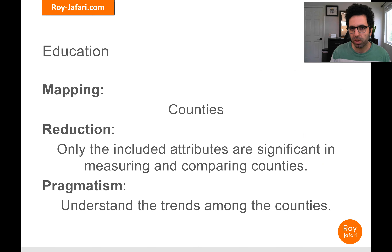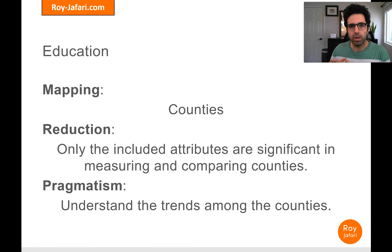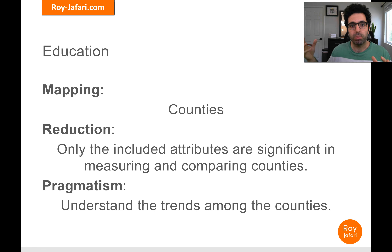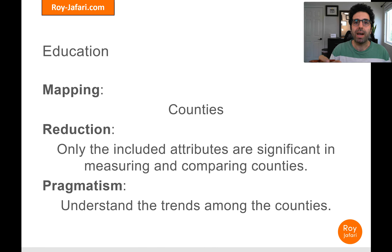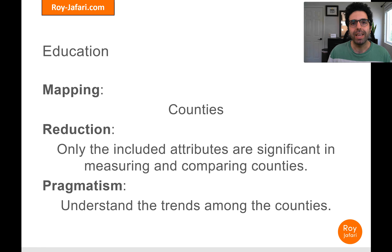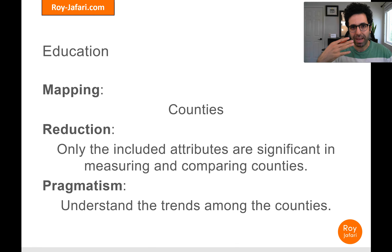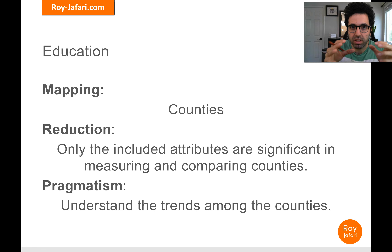So let's talk about those three elements of general model theory. The mapping: we are mapping the counties. The reduction: we are saying that the only things that matter about these counties are the attributes we have decided to include in this model — anything not measured or not included is excluded from the result. The pragmatism: we can understand trends and patterns among counties, see which are more similar or different, and find meaningful groupings inherent in the data.